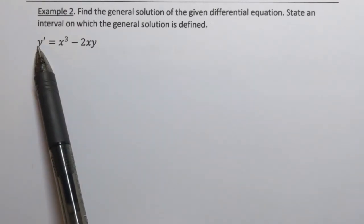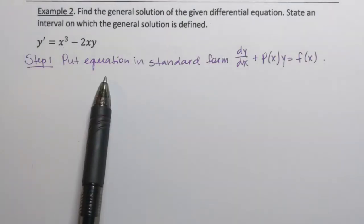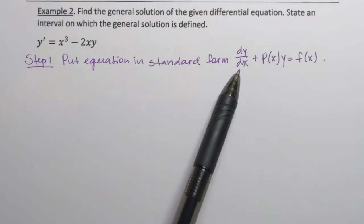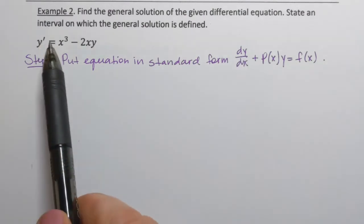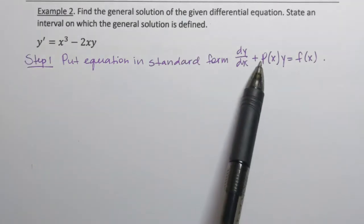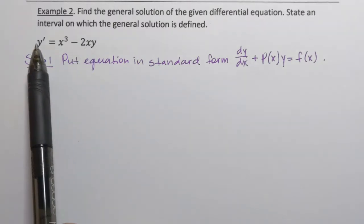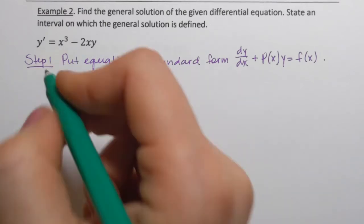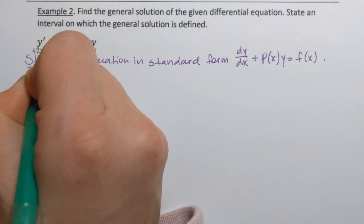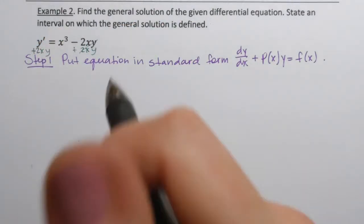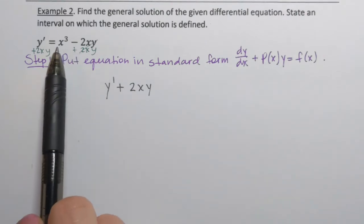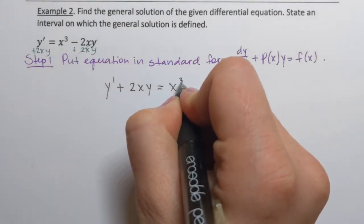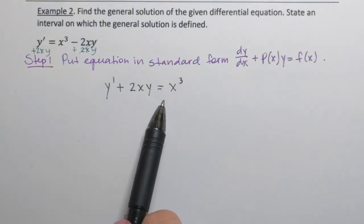Let's refresh the steps we have to take for solving. Step one: we need to put the equation in standard form. It has the first derivative with no coefficient in the front, which is exactly what we have. Then y should have its coefficient next to it, so we'll move it to the left side by adding 2xy. So y' plus 2xy, and the standalone function of x, x cubed, stays on the right-hand side. That is f of x in our equation. Step one is done.